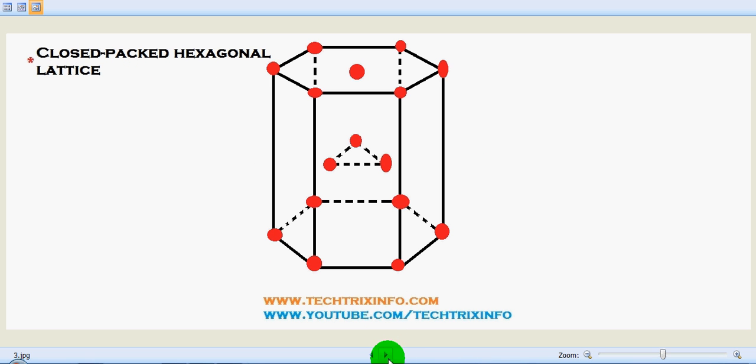And let's see the close-packed hexagonal lattice. Here there are three layers in each of such non-symmetrical cell. Top and bottom layers consist of six atoms in a hexagon with one atom at the center.